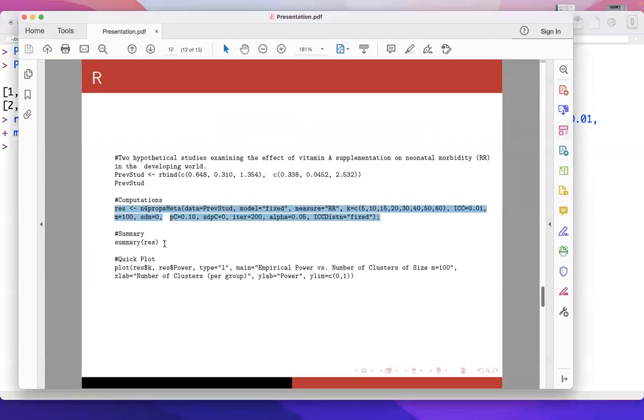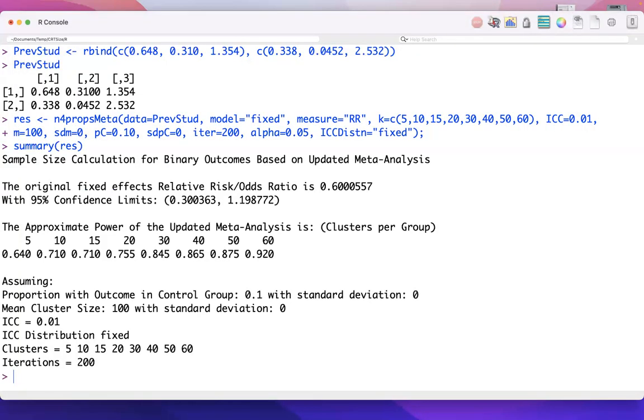Now, let's have a look at our results here. So, as an initial step, the function returns a very basic estimate of the meta-analysis relative risk here. So, we can see an approximately 40% reduction of the risk of morbidity, corresponding to a relative risk of 0.6. The 95% confidence limits are from 0.3 to approximately 1.2.